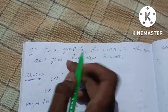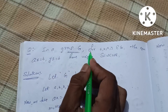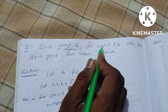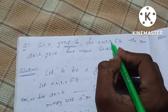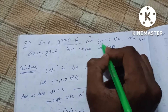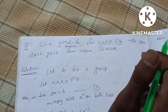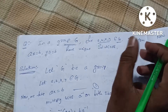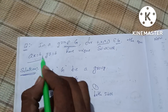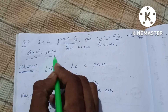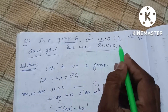Group G. For a, b, x, y belonging to G, we have four elements. G is a group. The equations ax = b and ya = b have unique solutions.